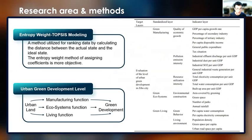For the methodology, I used the entropy weight method to calculate indicator weights more objectively, and the TOPSIS model to systematically evaluate the data. In the construction, I measure the level of green development through the three main functions of urban land: manufacturing function, ecosystem function, and living function. The details of my indicator system are shown in the table on the right.